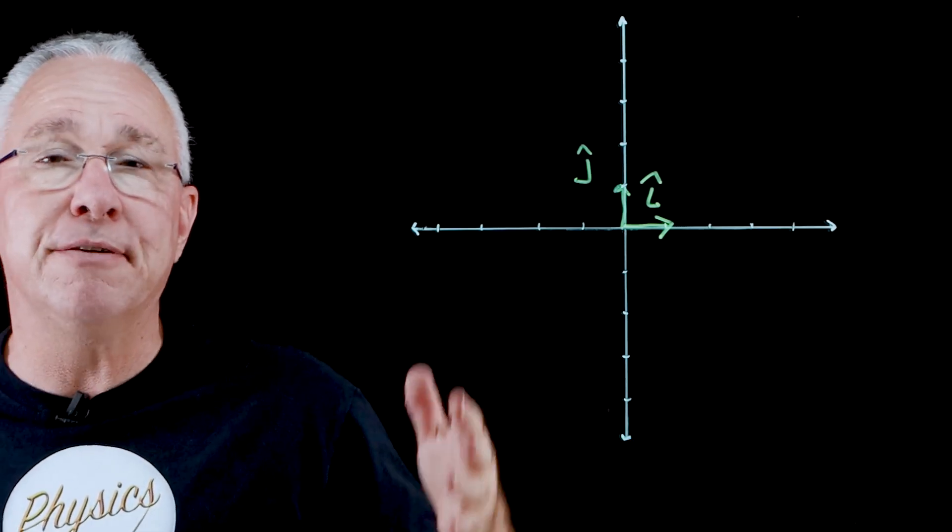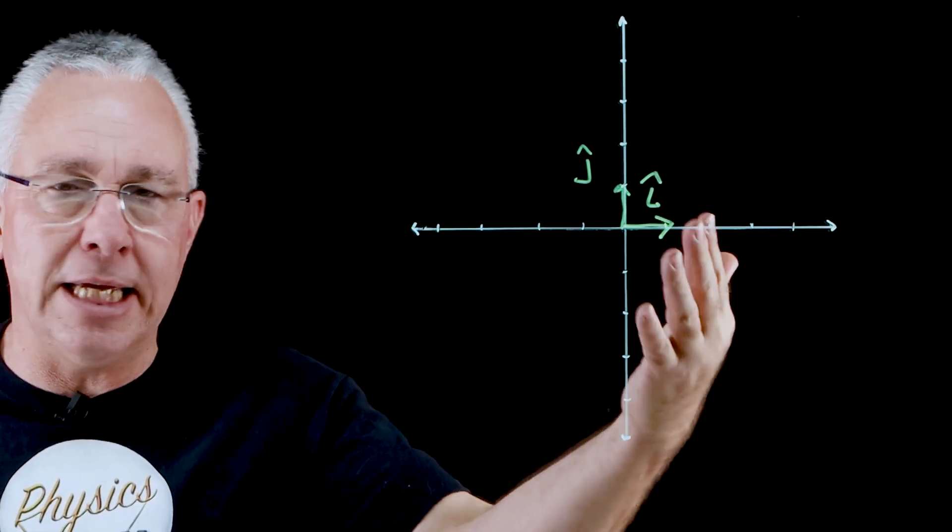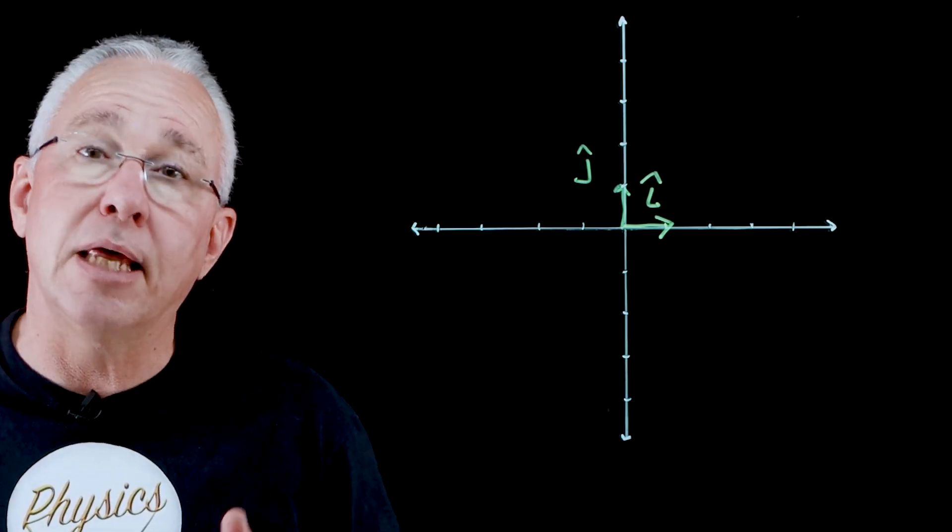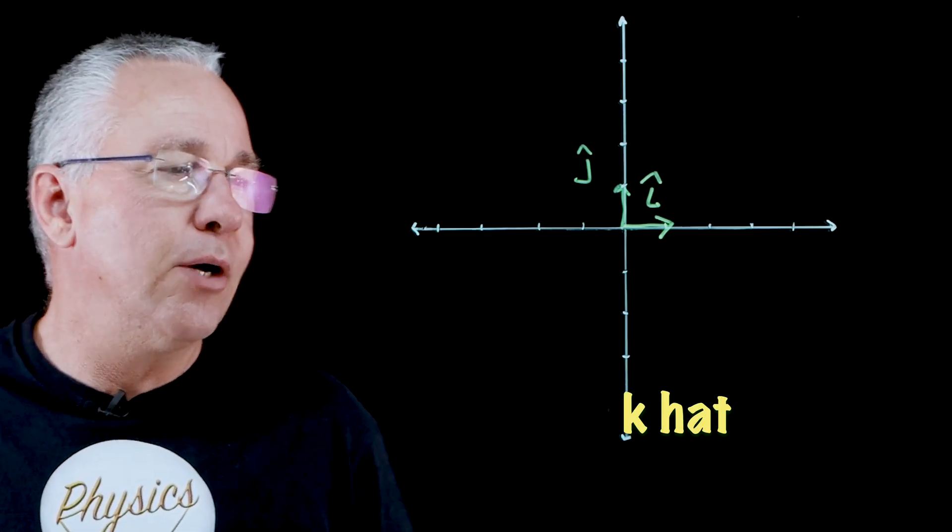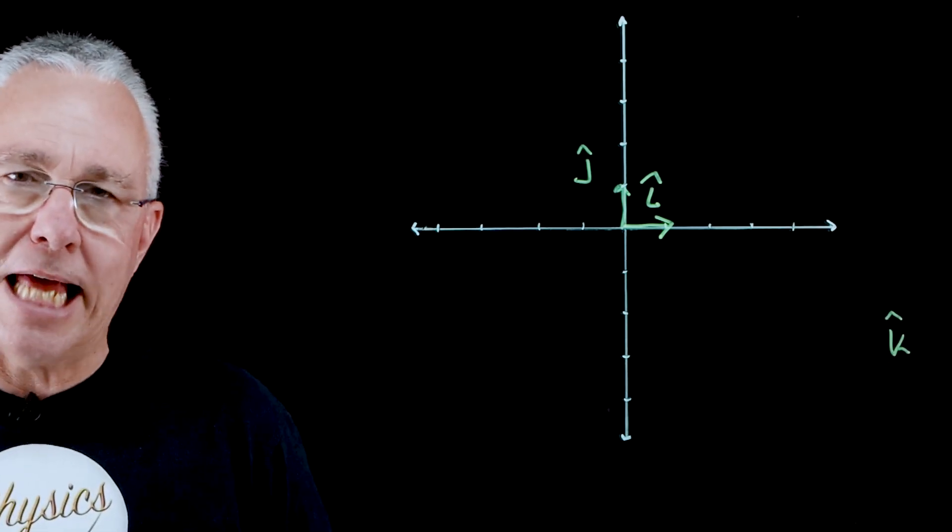And of course, if I have a three-dimensional space, in other words I have an axis going in and out of the board, I'll have a unit vector that is called k hat. In other words, we have in this case a unit vector going along the z axis.